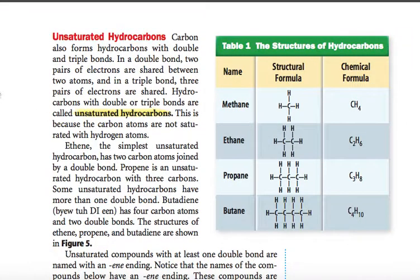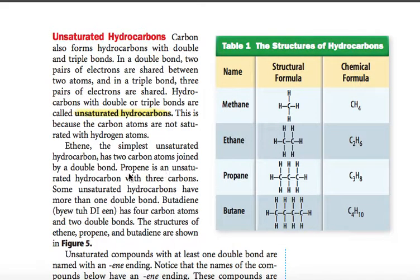Unsaturated hydrocarbons: carbon also forms hydrocarbons with double and triple bonds. In a double bond, two pairs of electrons are shared between two atoms; in a triple bond, three pairs of electrons are shared. Hydrocarbons with double or triple bonds are called unsaturated hydrocarbons because the carbon atoms are not saturated with hydrogen atoms. Ethene, the simplest unsaturated hydrocarbon, has two carbon atoms joined by a double bond. Propene is an unsaturated hydrocarbon with three carbon atoms. Butadiene has four carbon atoms and two double bonds. The structures of ethene, propene, and butadiene are shown in Figure 5.